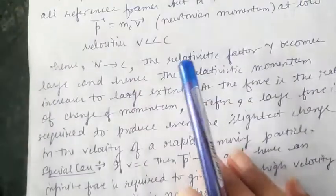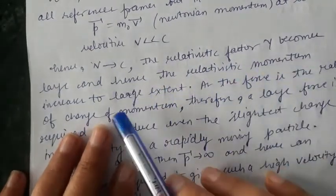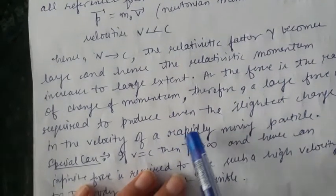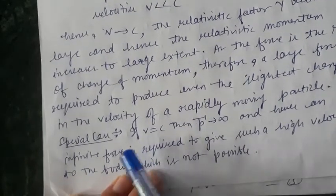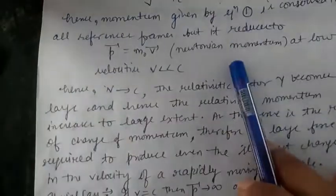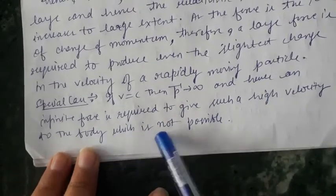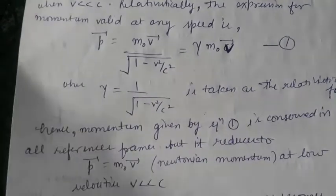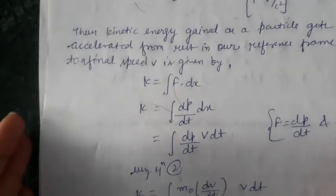When v approaches c, the gamma factor becomes very large, and hence relativistic momentum increases to a very large extent. Since force is the rate of change of momentum, a very large force is required to produce even the slightest change in velocity of a rapidly moving particle. As a special case, if v equals c, then p approaches infinity, and hence an infinite force would be needed — which is not possible. Therefore, v can never reach c; it is considered impossible.